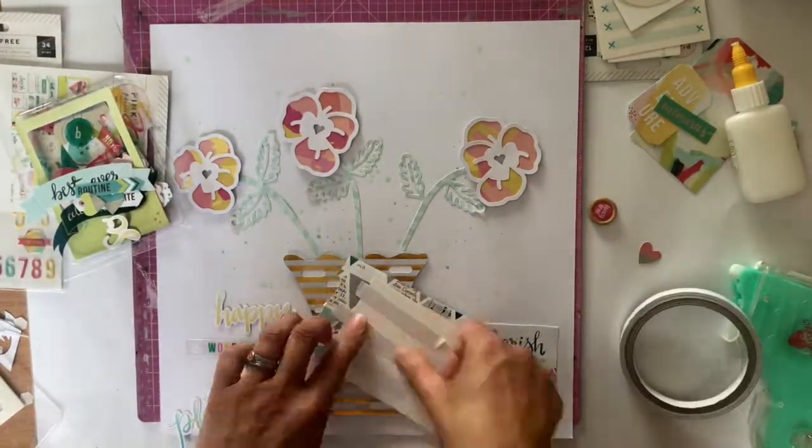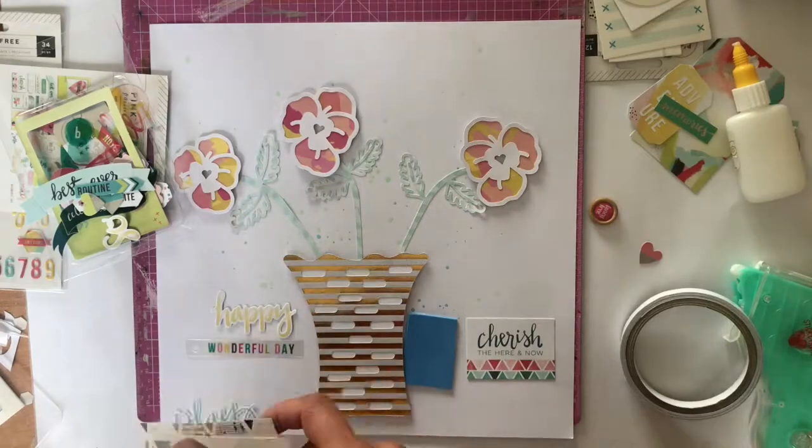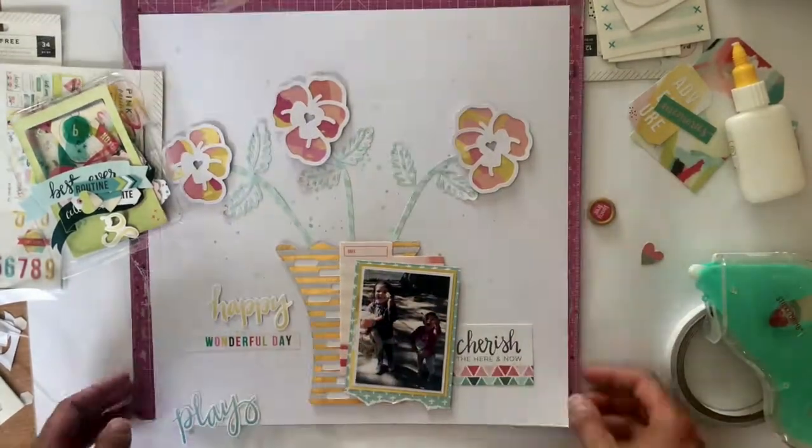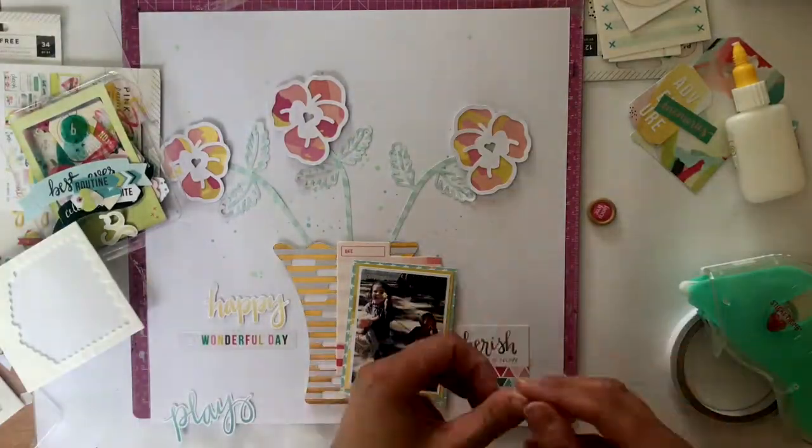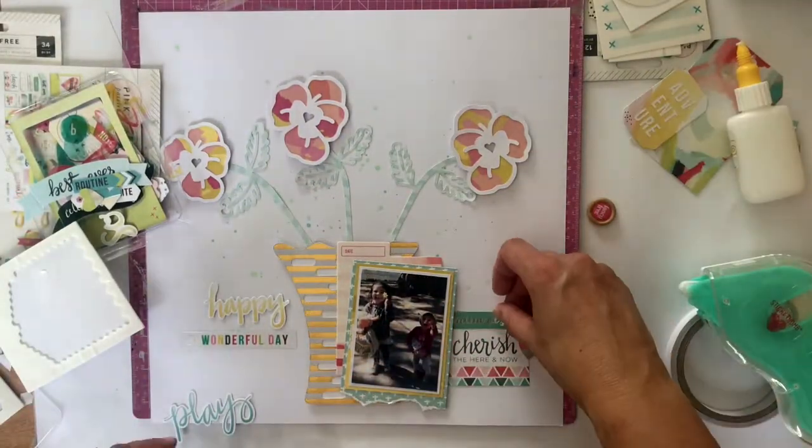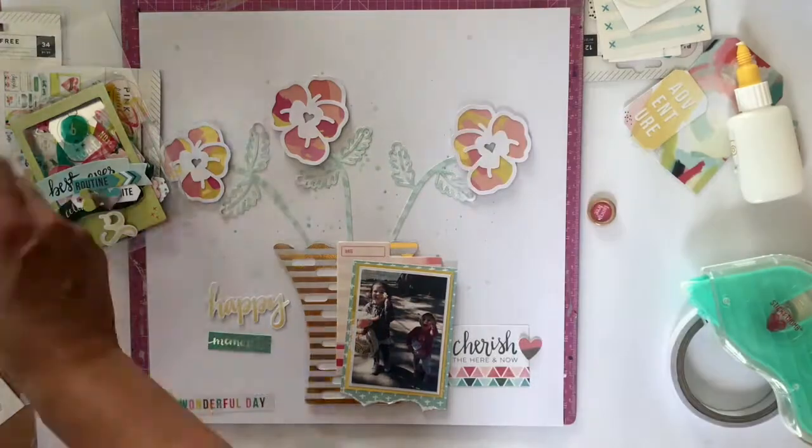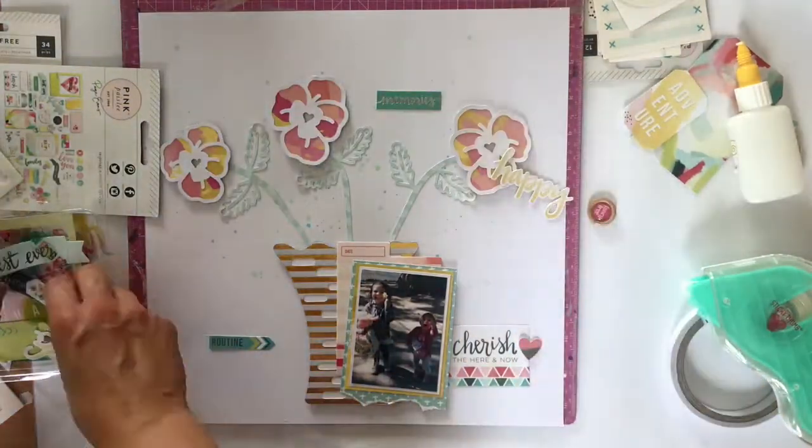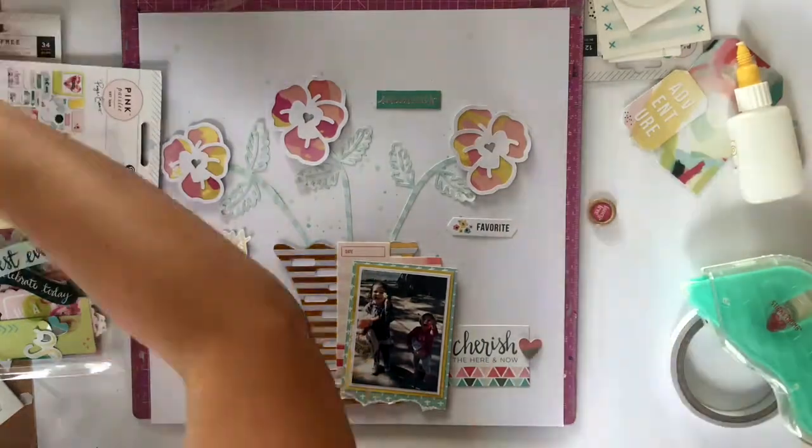I've put some foam down to lift up my photo. And I like that you can still see the vase underneath that photo. So I thought that 'cherish the here and now' was perfect, and a little heart that I've popped up. And then I love that that word says on that little tab says 'routine,' because that's what we do on a Tuesday.